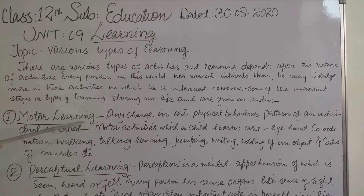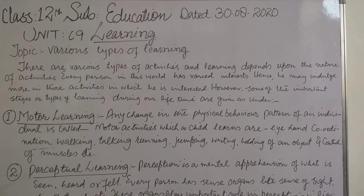Number one: motor learning. Motor learning means any change in the physical behavior pattern of an individual. When the child is young and his mental capacities are not so developed, he learns motor activities such as eye-hand coordination, walking, talking, running, jumping, writing, holding of an object, and control of muscles. These all are known as motor learning. Acquisition of all skills is a part of motor learning; in fact, motor learning is a sort of imitation learning.